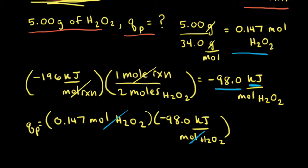This gives us our final answer. The heat released when 5.00 grams of hydrogen peroxide decomposes at constant pressure is equal to negative 14.4 kilojoules.